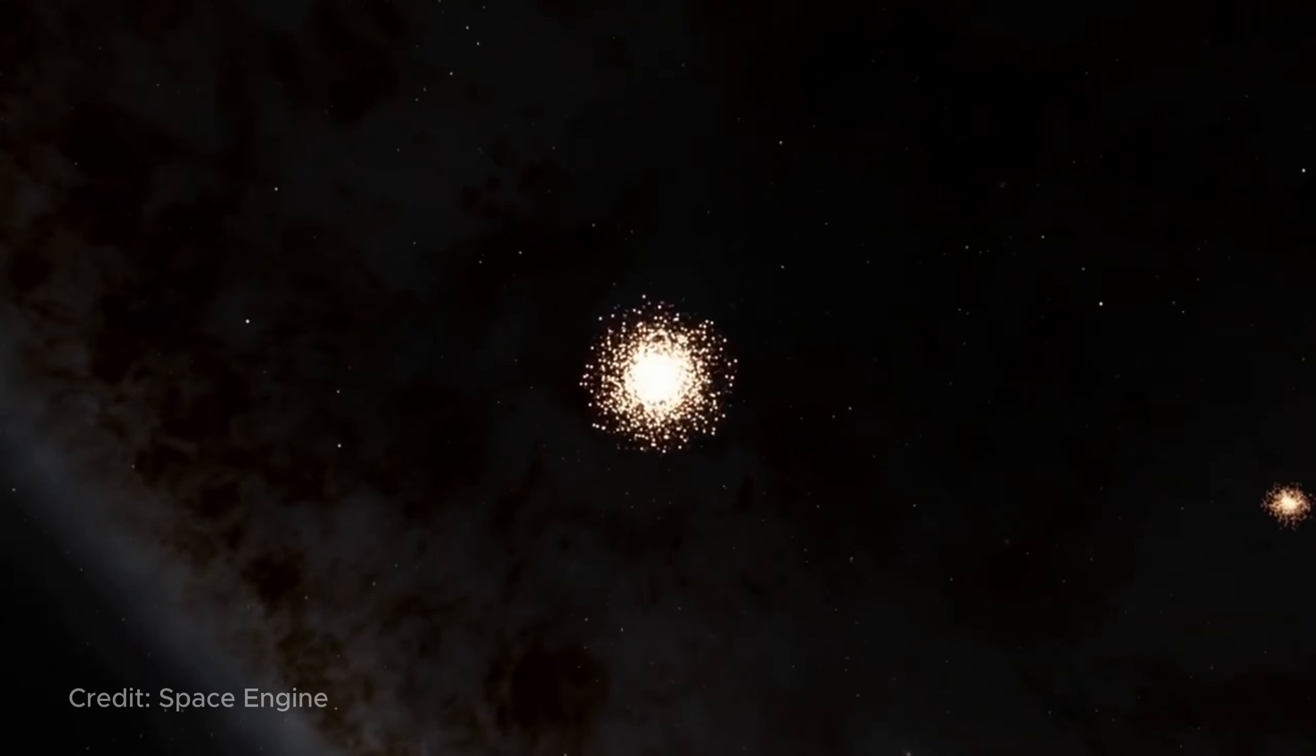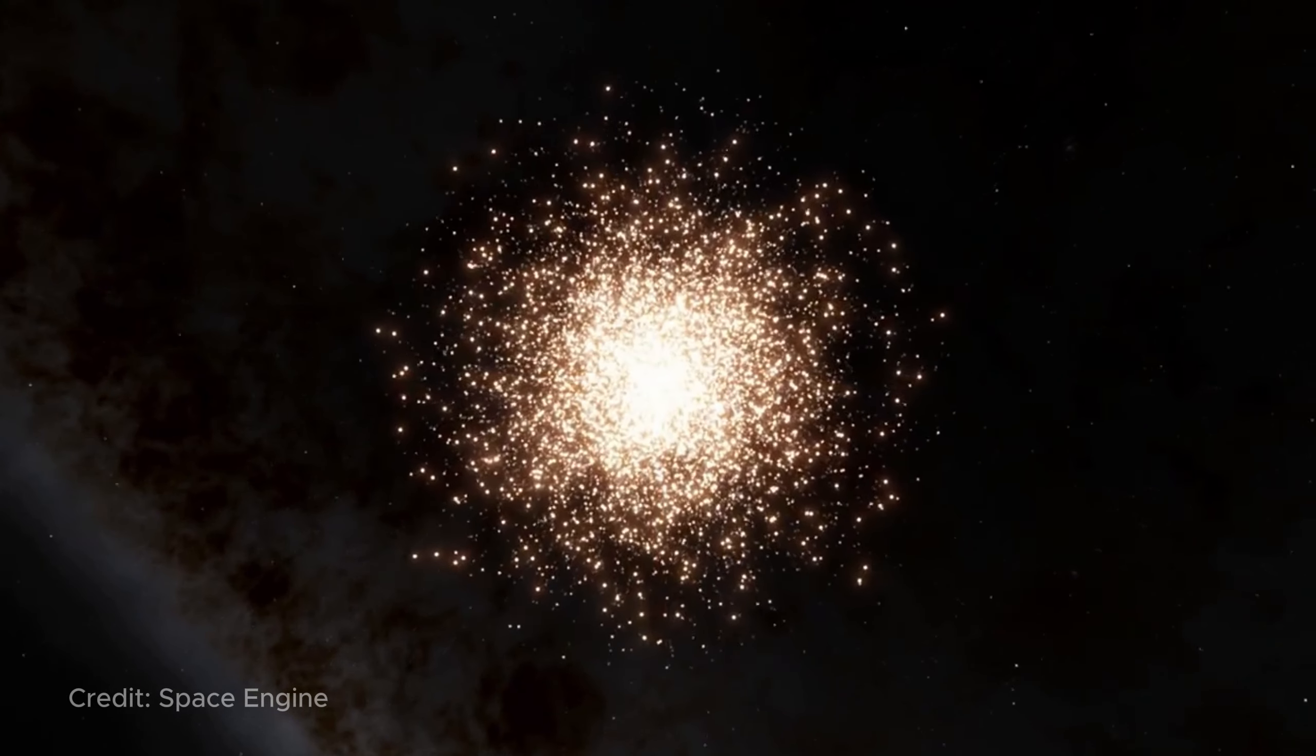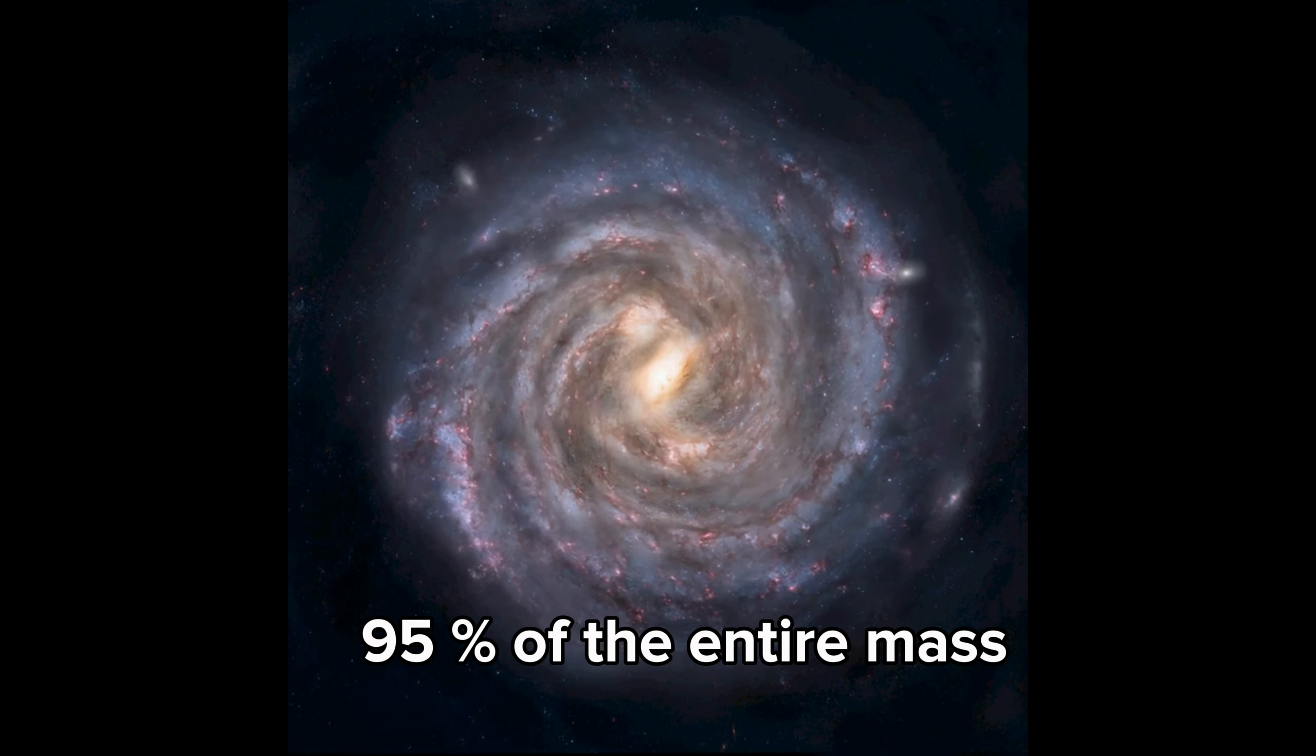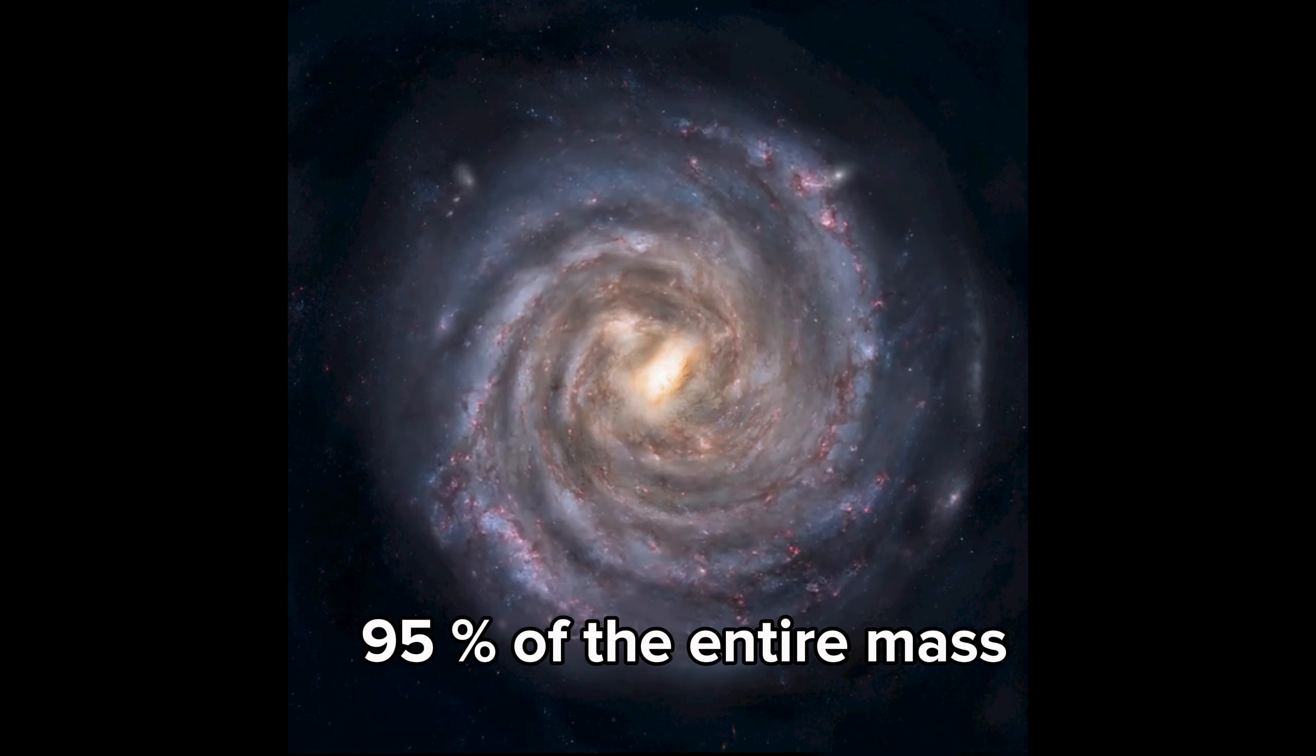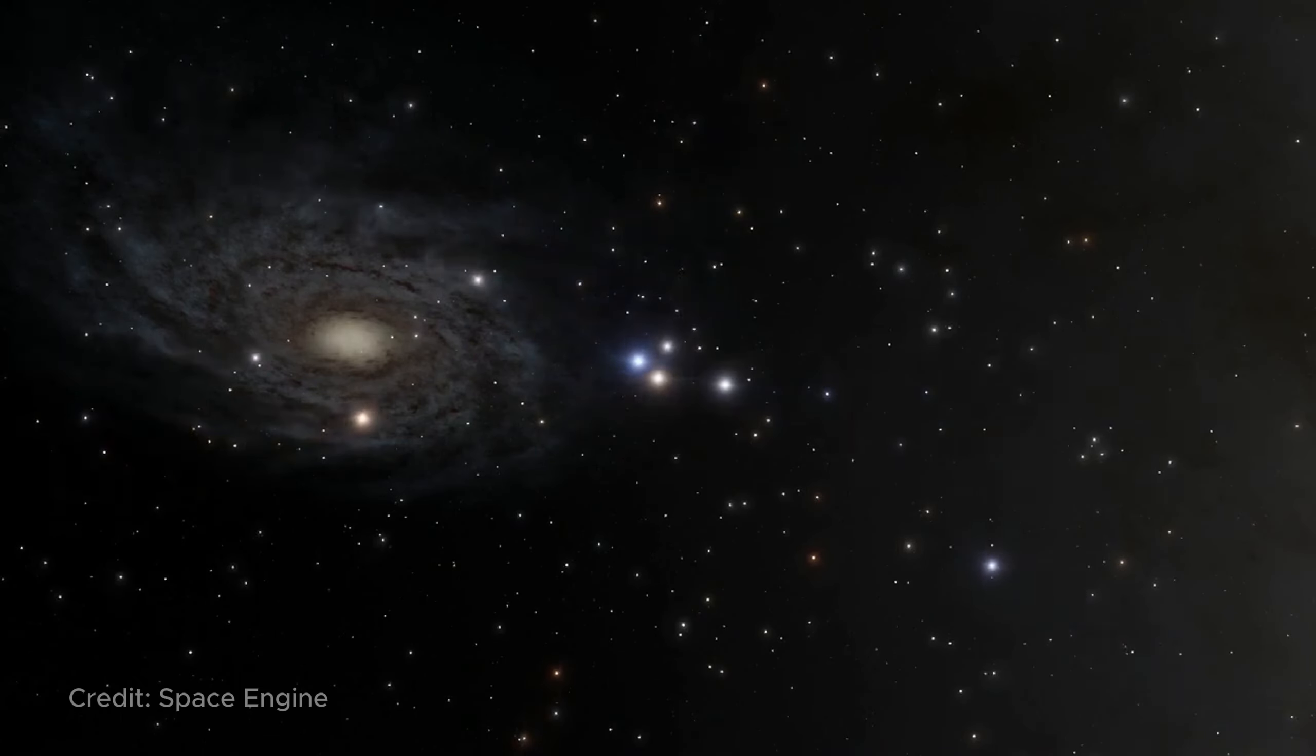The total mass of dark matter is significantly greater than that of ordinary matter. For example, in the Milky Way, 95% of the entire mass of the galaxy is composed of dark matter. This is incredibly large and changes all the rules of the game because, on the contrary, it is dark matter that dictates what galaxies will be like and where exactly.